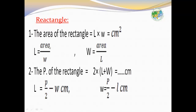Rectangle. The area of a rectangle equals length times width. The length of a rectangle equals area over width. The width equals area over length. The perimeter of the rectangle equals 2 times (length plus width). If we want to find the length, it equals perimeter over 2 minus width. If we want to find the width, it equals perimeter over 2 minus length.